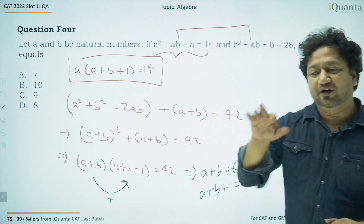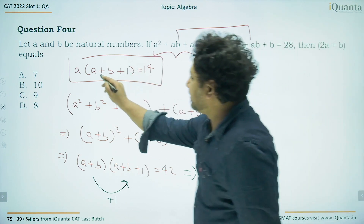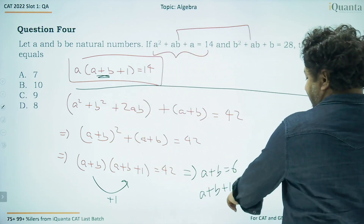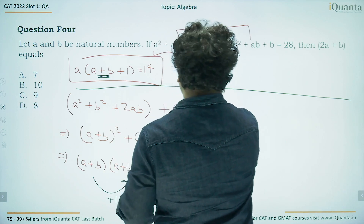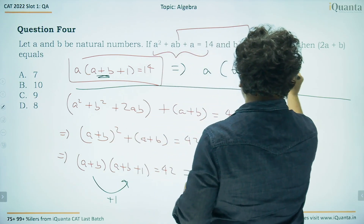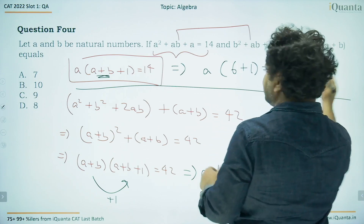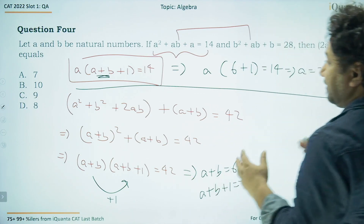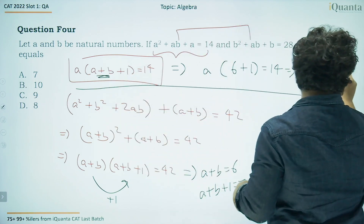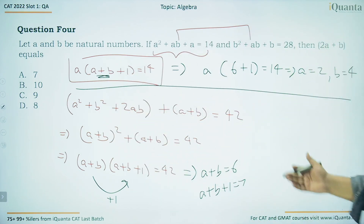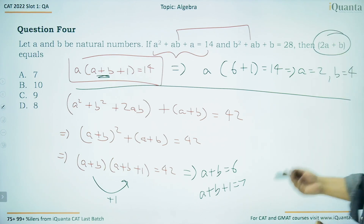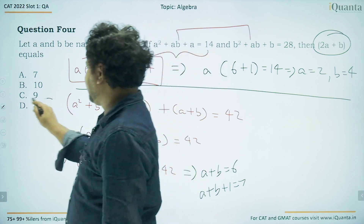Substituting a + b = 6 into the first equation: a(6 + 1) = 14, so 7a = 14, giving a = 2. With a = 2 and a + b = 6, we get b = 4. Therefore 2a + b = 2(2) + 4 = 8. Option B is the correct answer.